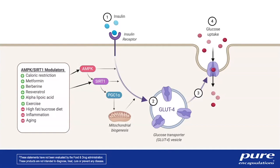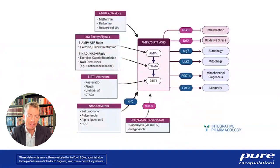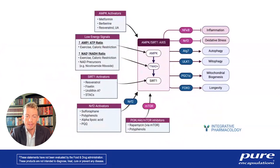High-fat, high-sugar diets, inflammation, and aging all down-regulate this AMPK process. If you're restricting calories and exercising, this entire pathway is up-regulated, and supplementing with berberine is only going to help with that. My website integrativepharmacology.com has an infographic covering all the different ways to support AMPK — berberine is just one of them, useful if you want to diversify a protocol aimed at metabolic health, cardiometabolic health, or healthy aging.